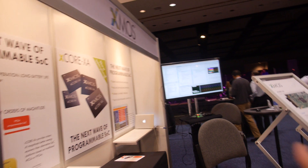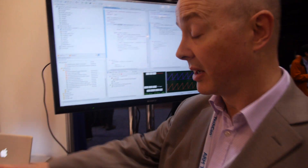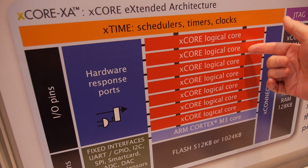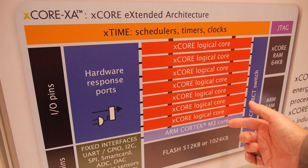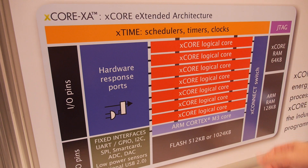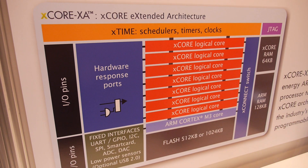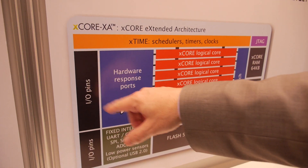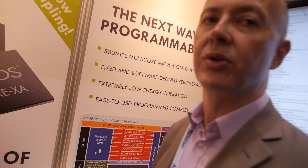So basically, you have two solutions in one? Or how does that work? Actually, what we have is an eight-core device, where these are our own proprietary 32-bit RISC architecture. And the eighth core is an Arm Cortex-M3. They're all connected together with this very low latency switch. And we can use the low power capabilities of the Arm subsystem, or we can have very, very high performance hardware I/O. So for hard real-time problems, we can use the XCore capability. It's a very cool solution.